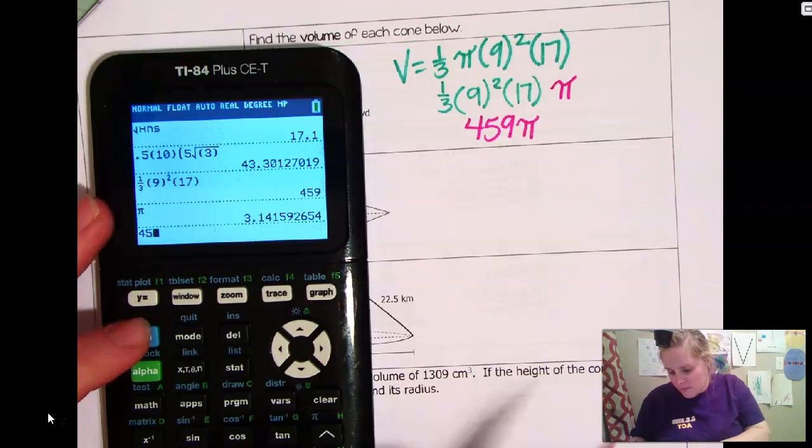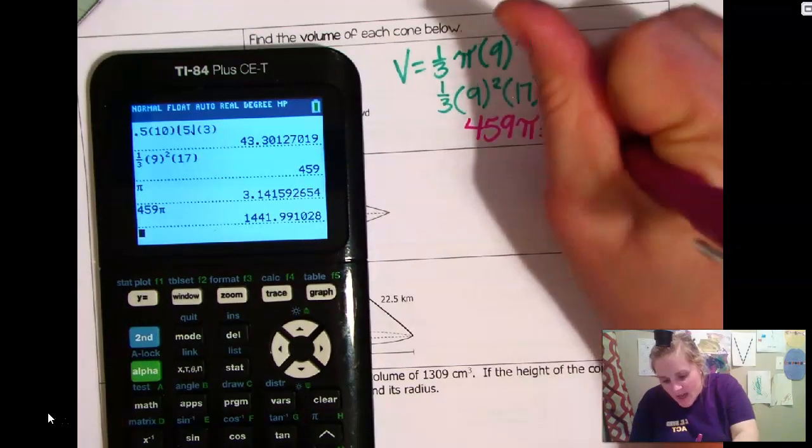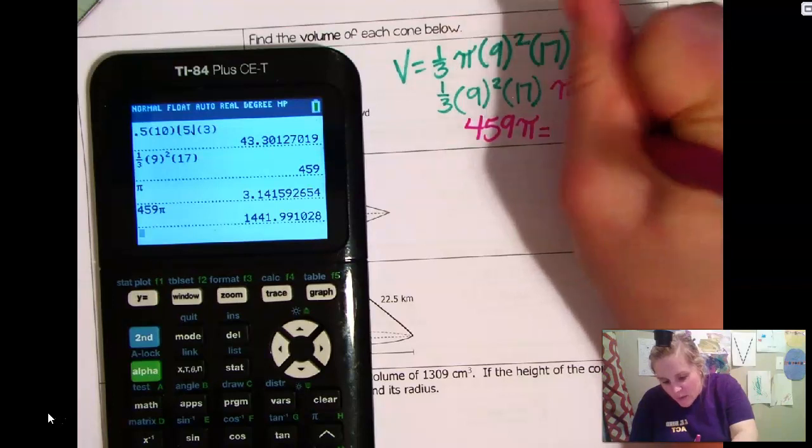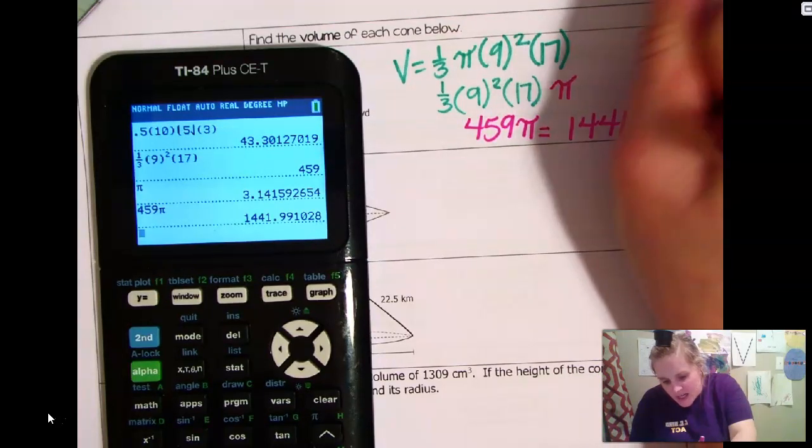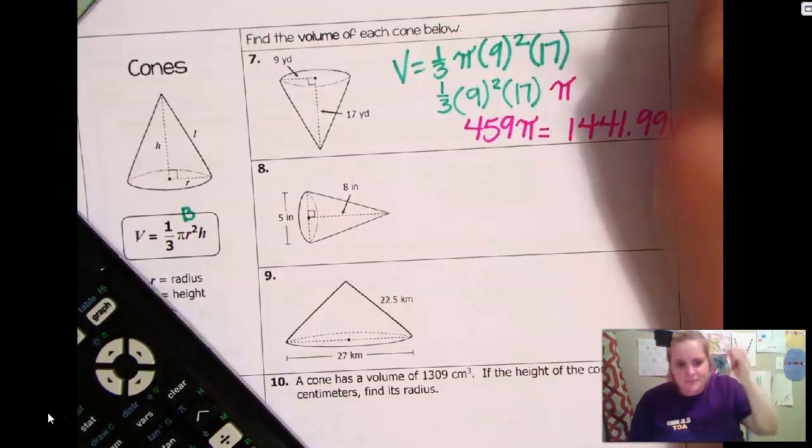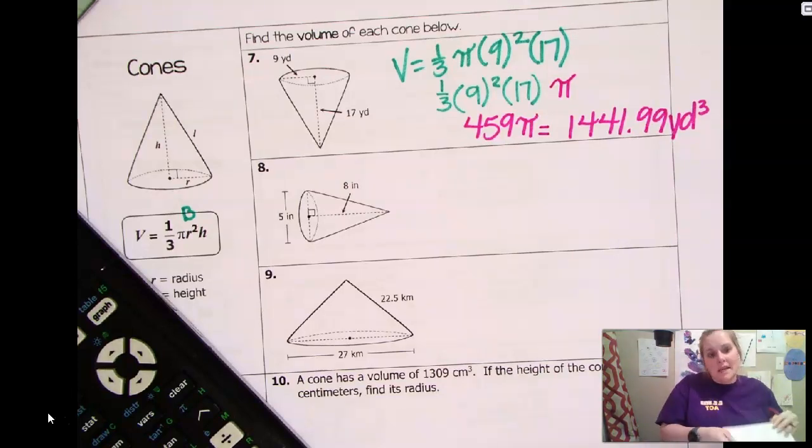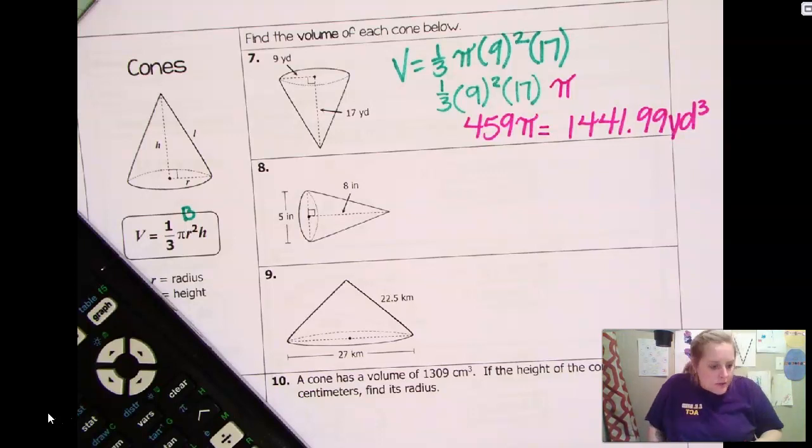So I'm just going to go ahead though and multiply that times Pi. Sorry. Using my Pi button. So that means it's 1,441.99 yards cubed. Okay? So just know the difference between in terms of Pi versus the actual volume. Okay?